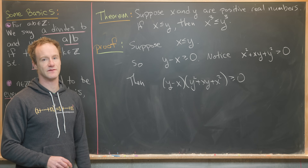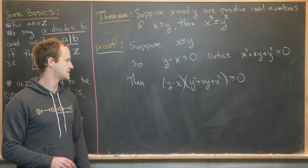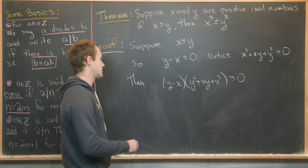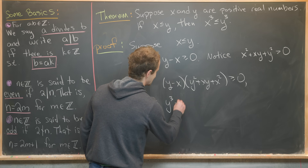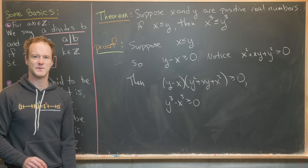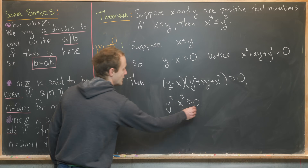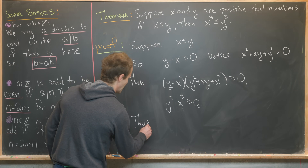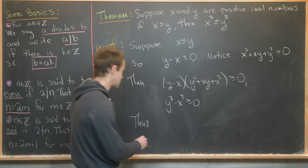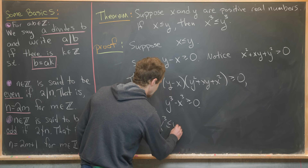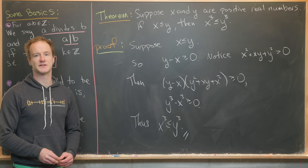The left-hand side is the standard factorization for a difference of cubes. So multiplying it out, we get y cubed minus x cubed is greater than or equal to zero. We can rewrite that as x cubed is less than or equal to y cubed — which is exactly where we wanted to end. And that's a good place to stop.